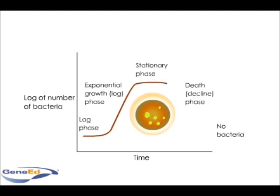the nutrients are used up, and waste products from the bacteria build up in the environment. The loss of nutrients and build up of waste products can cause the environmental pH or temperature to shift,